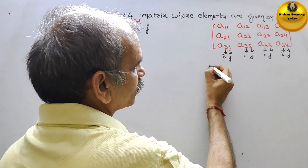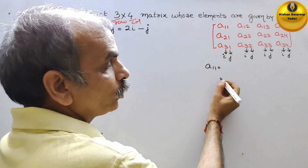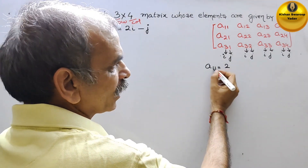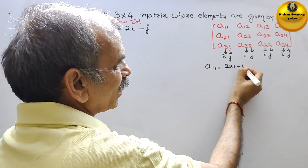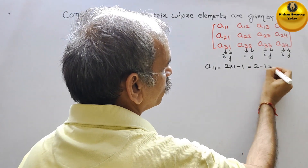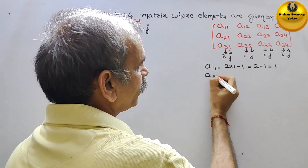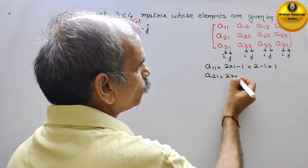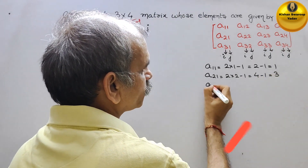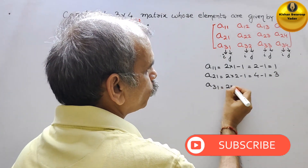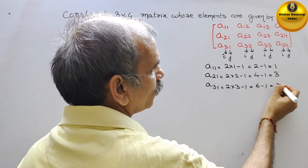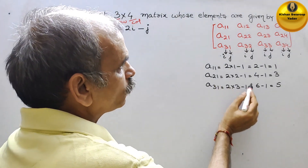So first comes A(1,1). That is equal to 2i minus j. Here i is 1 and j is 1, so we get 2 minus 1 equals 1. Next comes A(2,1): 2 into 2 minus 1 gives 4 minus 1, that is 3. Next comes A(3,1): 2 into 3 minus 1 gives 6 minus 1, that is 5. So these three values we substitute here.